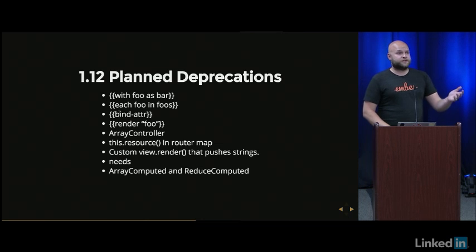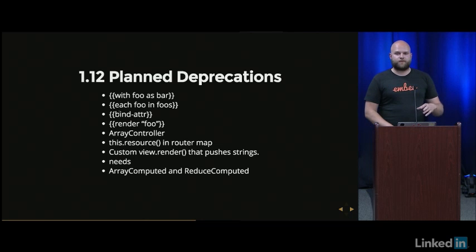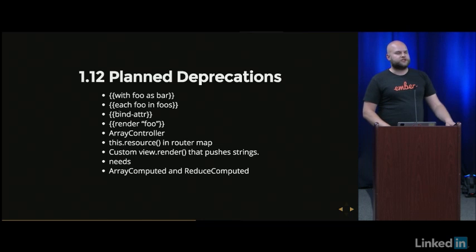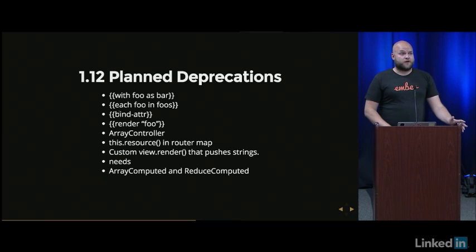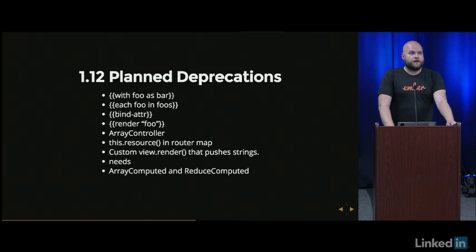Don't use resource anymore, just use route. Some view internals are deprecated too — if you override the render function and push strings into the buffer, with HTMLBars we build DOM so you should use DOM instead of plain strings. `needs` is a big one — the replacement is `Ember.inject.controller`, which is a lot nicer. Array computed and reduced computed are getting removed and put into a plugin — I don't recommend using them; once Glimmer lands it will likely make them unnecessary due to its virtual DOM implementation.